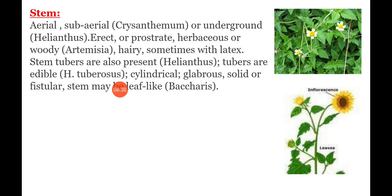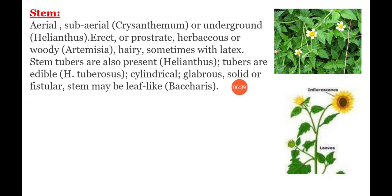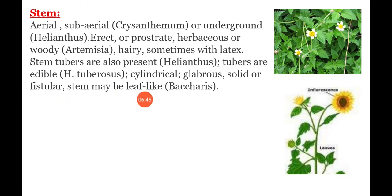The stem is cylindrical; sometimes it may be glabrous, meaning hairs are absent on the surface. Stem may be solid or fistular. In Baccharis, the stem is leaf-like.